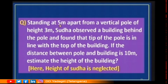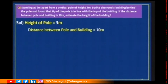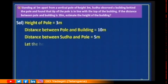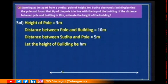Now let us know the applications of similarity. Here is a question: standing 5 meters apart from a vertical pole of height 3 meters, Sudha observed a building behind the pole and found that the tip of the pole is in line with the top of the building. If the distance between the pole and building is 10 meters, estimate the height of the building. The height of the pole is 3 meters, distance between pole and building is 10 meters, distance between Sudha and pole is 5 meters, and the height of the building is taken as h meters.